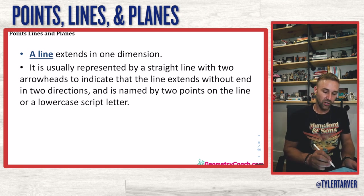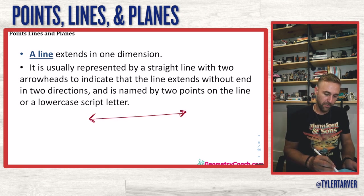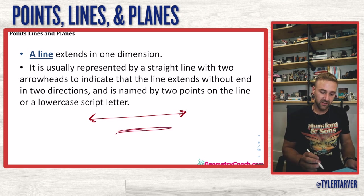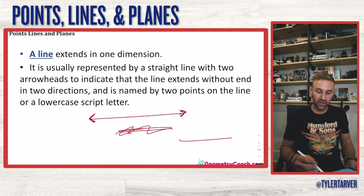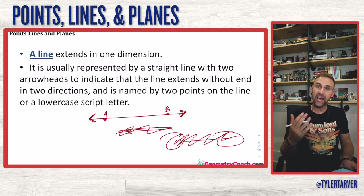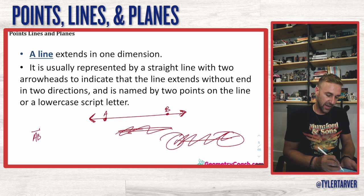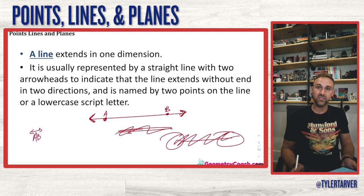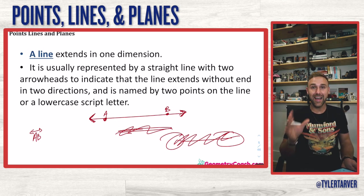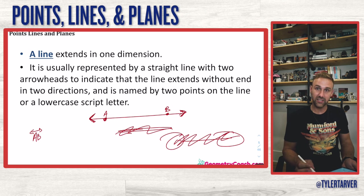A line is named by two points on the line or a lowercase script letter. I've got these arrows on each end — that is a line. If you see a line without arrows, that's not a line. You need at least two coordinates, like A and B, and you label it as line AB with arrows above it. A line has arrows on each end — that's very important, because without arrows it becomes a segment.